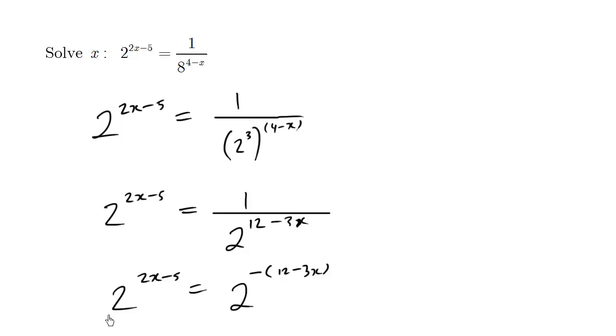So what I have here is the same base and different exponents. These exponents must be the same. So we have 2x minus 5 equals negative 12 minus 3x.